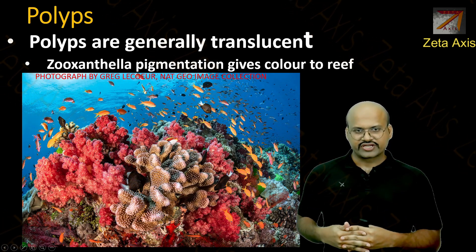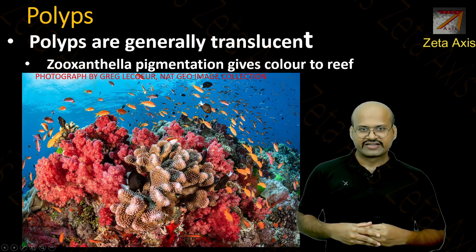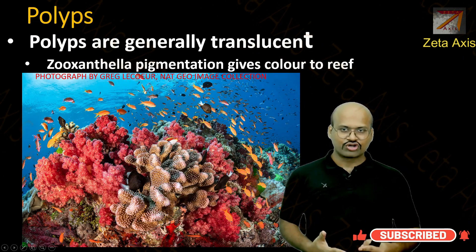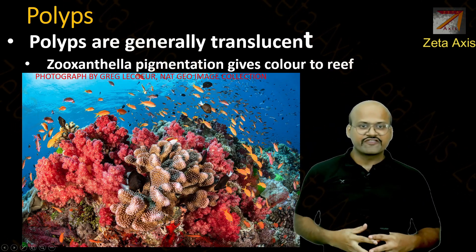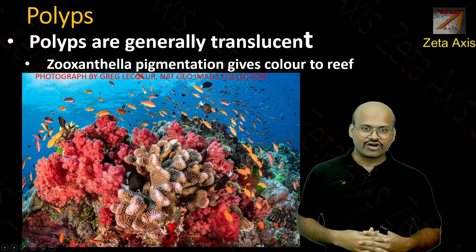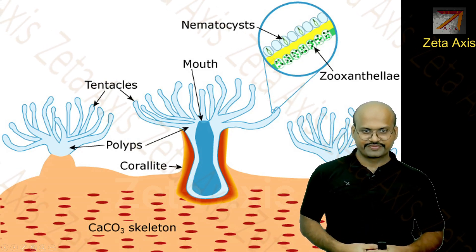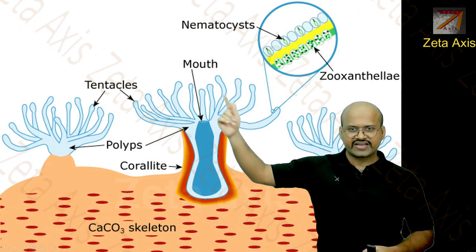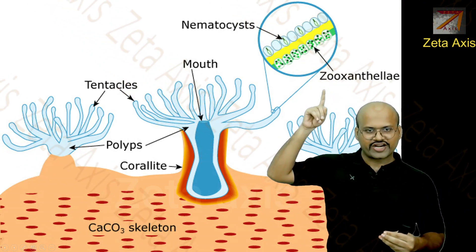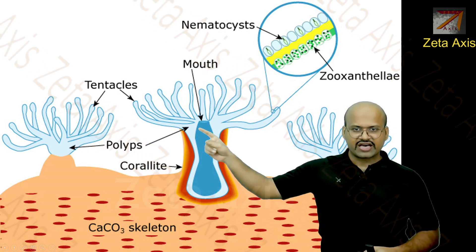The polyps are actually translucent or transparent — you can see through them. It is the pigmentation of the zooxanthellae algae that provides color to the corals. Different colors of corals exist because of the different colored pigmentation provided by the zooxanthellae. If we remove the zooxanthellae, all corals would appear white because they are made of calcium carbonate structures. To summarize: corals are animals with tentacles, they feed through their mouth, have zooxanthellae algae in their tissue providing food via photosynthesis, and their body is attached to the calcium carbonate substrate.